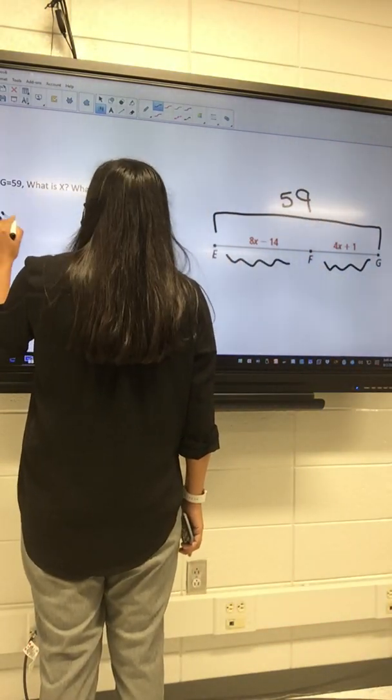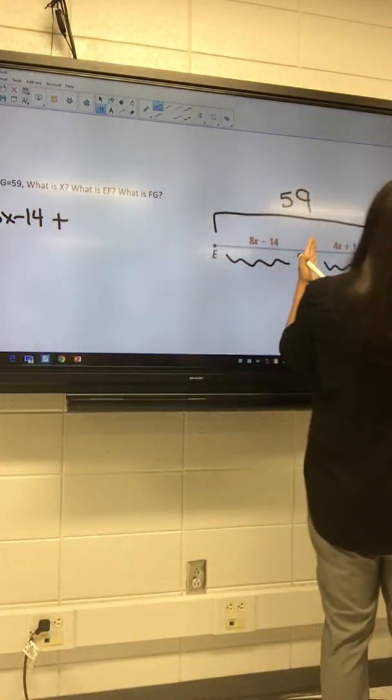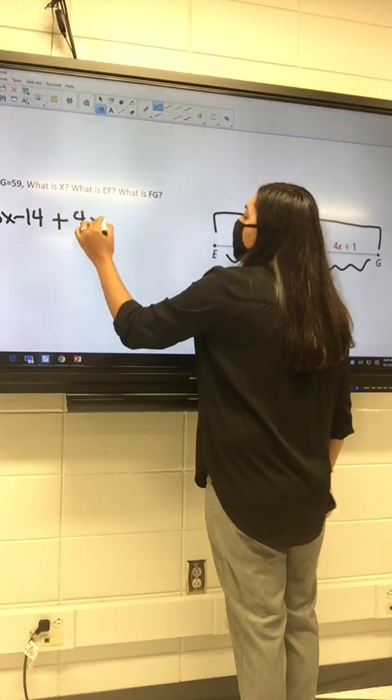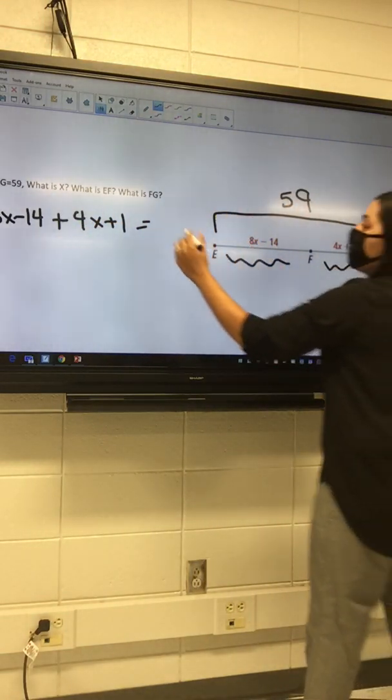So we can say EF, which is 8x minus 14, plus FG, which is 4x plus 1, will all equal the entire segment, which is 59.